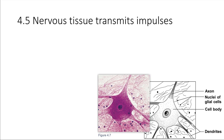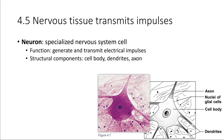Our fourth tissue type in the human body is nervous tissue. Nervous tissue is very unique — it is designed to allow us to transmit impulses and transmit information. This requires some very specialized cells in order to do this. The main cell types involved in nervous tissue are the neurons.